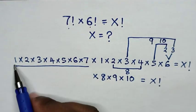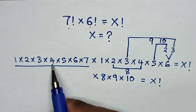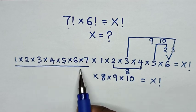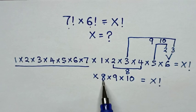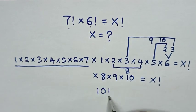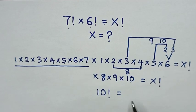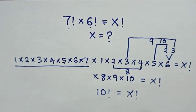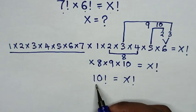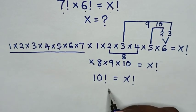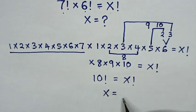Then, from 1 times 2 times 3 times 4 times 5 times 6 times 7 times 8 times 9 times 10 is same as 10 factorial, which is equal to x factorial. Therefore, when we compare 10 factorial with x factorial, then x is equal to 10.